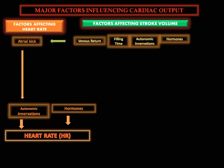Stroke volume is regulated by autonomic innervation and hormones, but also by filling time and venous return. Venous return is determined by the activity of the skeletal muscles, blood volume, and changes in the peripheral circulation.